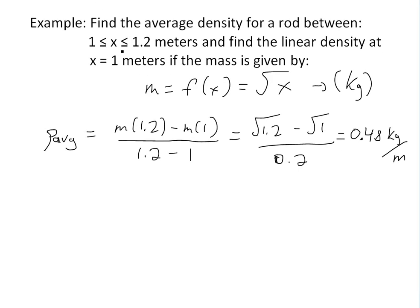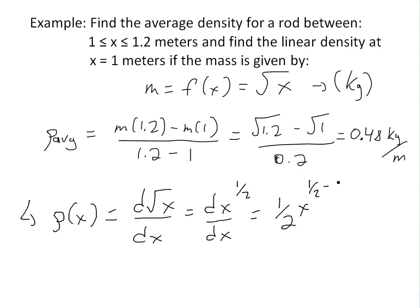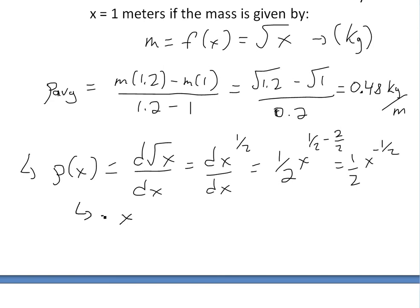But if you wanted to get the exact linear density at this starting point of x equals 1 meters, we will have to find the derivative. So rho of x in general is going to be equal to the derivative of this, or d square root x dx. You could write it as d x to the 1 over 2, and then apply the power rule. You bring down the 1 over 2, and then you'll have x to the 1 over 2 minus 1. This will be 1 over 2 x to the negative 1 over 2, or 1 divided by 2 square root of x.